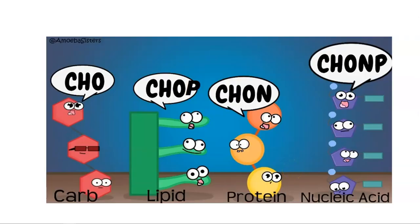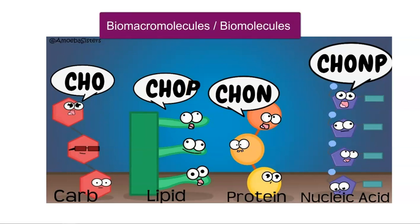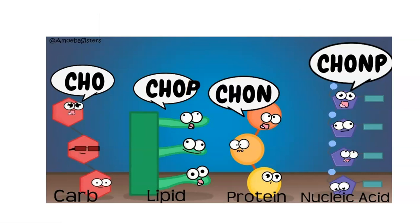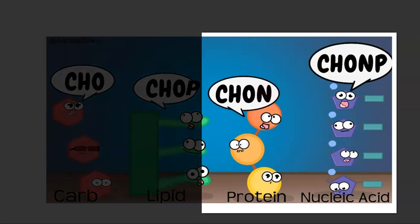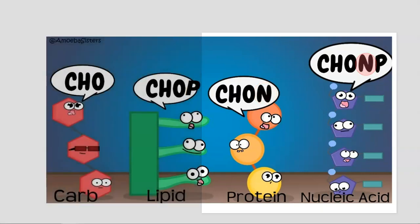First, we try to understand why nitrogen is important for a living organism. If you look at the biomolecules or macromolecules of any living system, it will be composed of carbohydrates, lipids, proteins and nucleic acids. These macromolecules are in turn made up of elements such as carbon, hydrogen, oxygen, phosphorus and nitrogen. These macromolecules are all serving as building blocks for the whole living system.